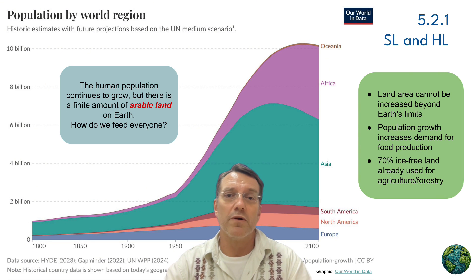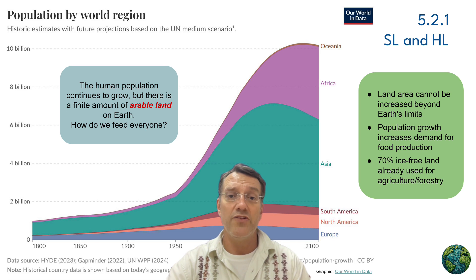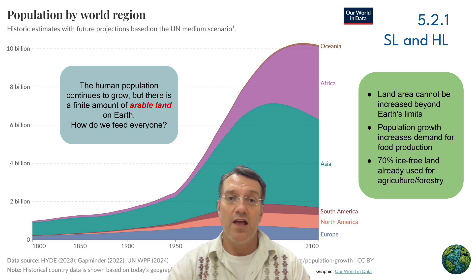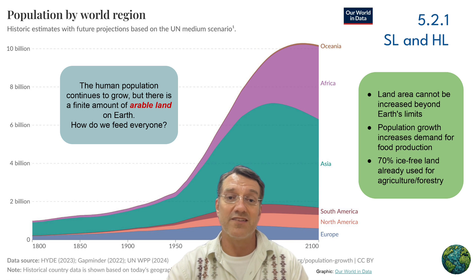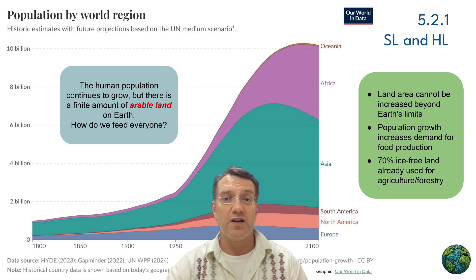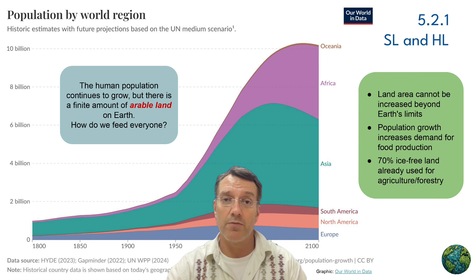This graph shows global population growth by region, with projections extending to 2100. Notice how the population curve keeps climbing, especially in Africa and Asia. The text box makes this crystal clear: we have a finite amount of arable land on Earth, but our population keeps growing. This isn't just a theory — we're already using about 70% of all ice-free land for agriculture and forestry. So the question becomes, how do we feed everyone when we can't significantly expand our farmland?